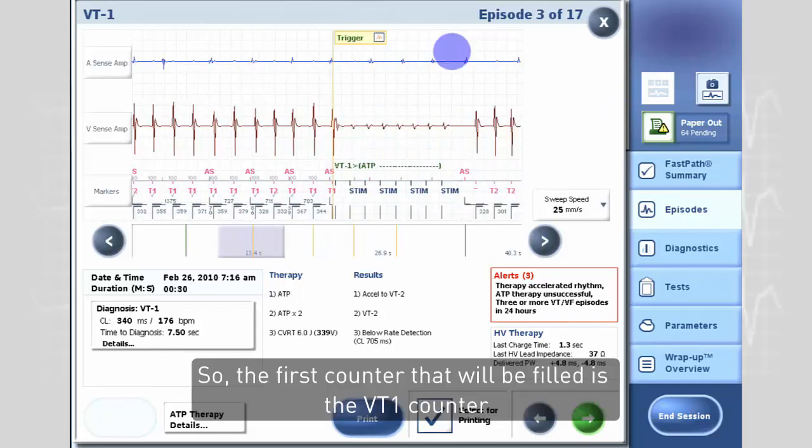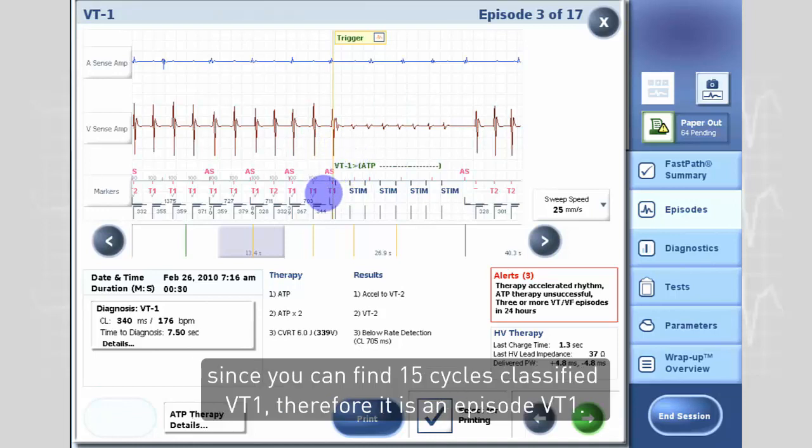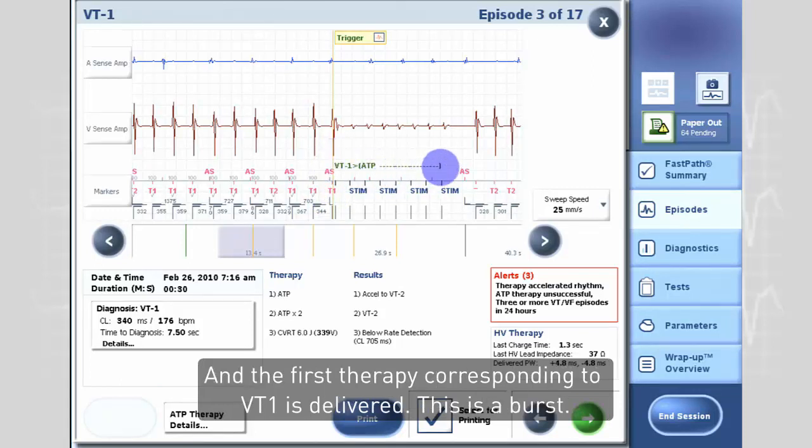The first counter that will be filled is the VT1 counter, since you can find 15 cycles classified VT1. Therefore it is an episode VT1, and the first therapy corresponding to VT1 is delivered. This is a burst.